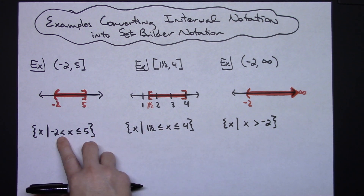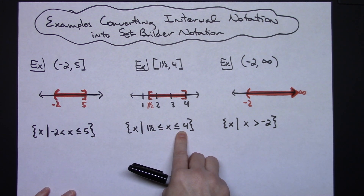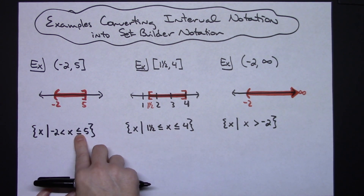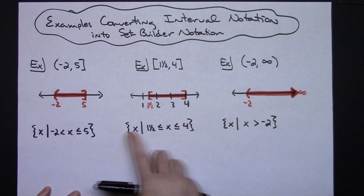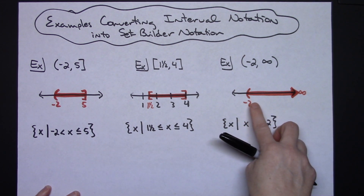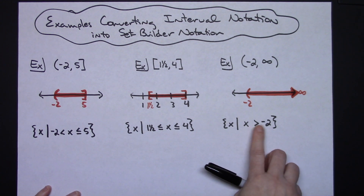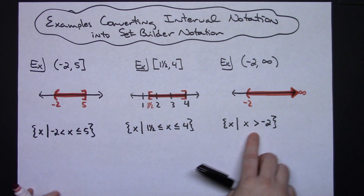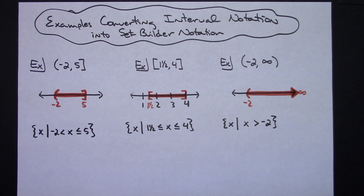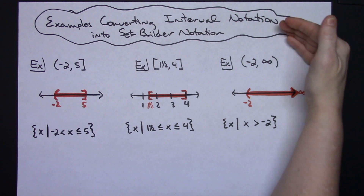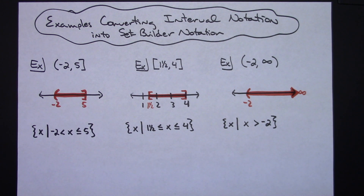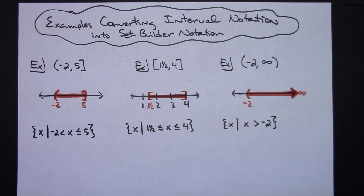When you have the inside of your set builder notation in an AND format — where x is in the middle — you're only allowed to use less than or less than or equal to. But when you have something like this where it's everything bigger than negative two, saying x is greater than negative two is fine using a greater than sign. Those are three quick examples showing how to go from interval notation to set builder notation, using the extra step of graphing first. Thanks for watching and don't forget to subscribe.